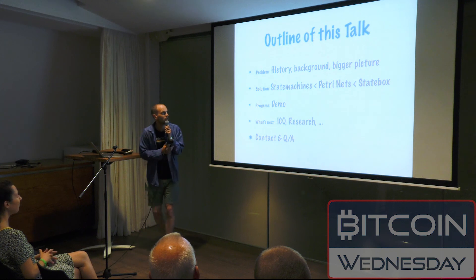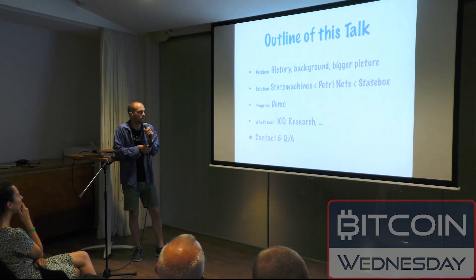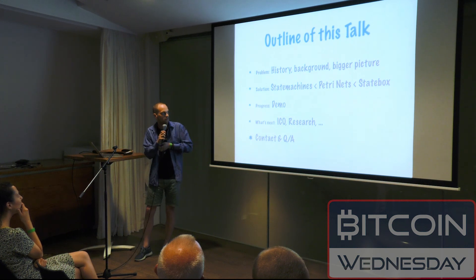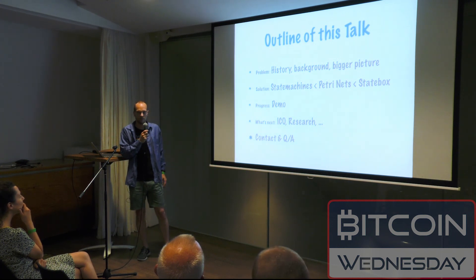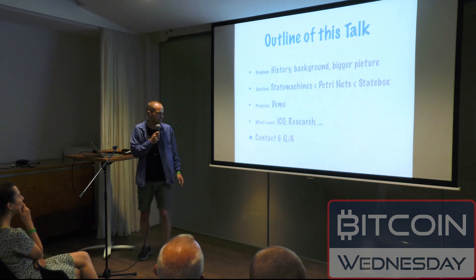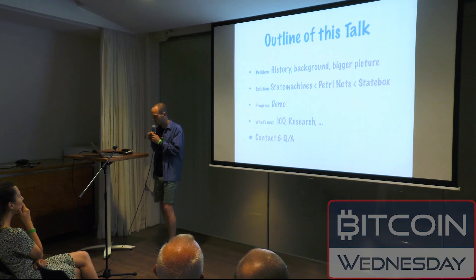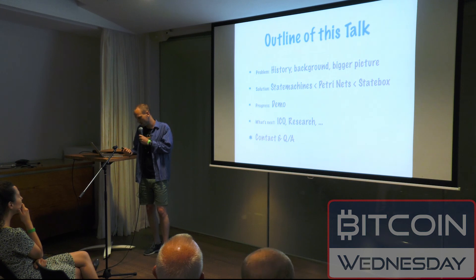Outline of the talk: I'll quickly go over the history of this system, the history of the mathematics behind it, give some background and a bigger picture. Then how you would approach solving this problem — we'll go from state machines to Petri nets to Statebox. Then I'll show a demo of the current situation. And then what's up next: ICO, research, and finally I'll try to leave some time for questions.